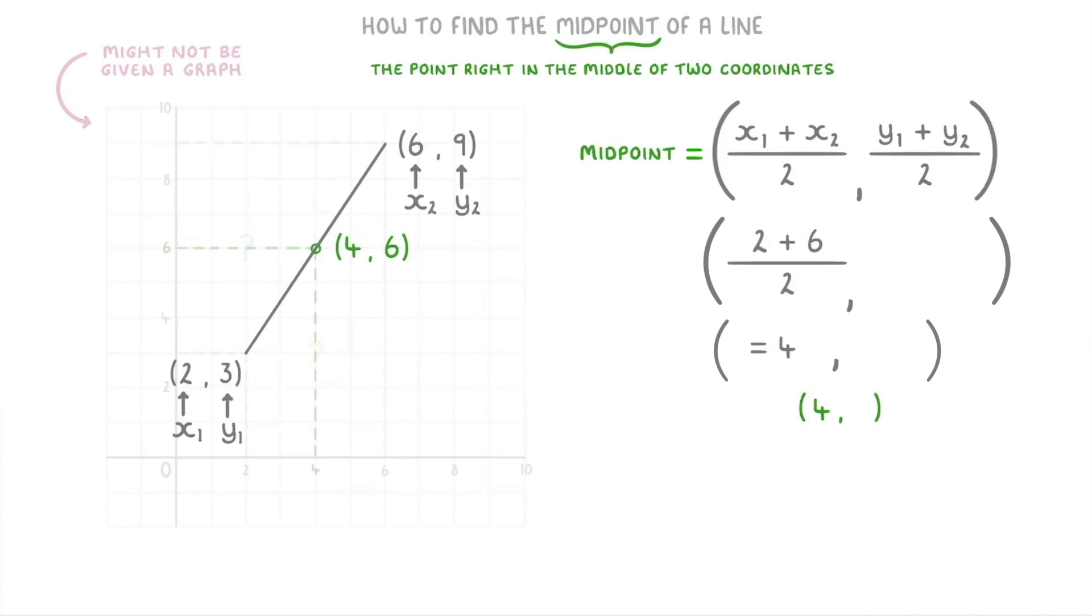Then we do exactly the same thing with the two y-values. So we do 3 plus 9 divided by 2, which is 6. So that's the y-coordinate of our midpoint. And notice that we've got a final answer of (4, 6), just like we did when we used the graph method a minute ago.